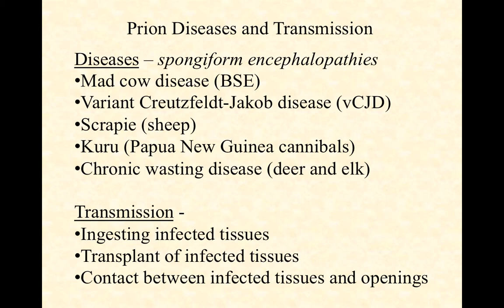Chronic wasting disease is not uncommon and is seen especially in deer and elk. Hunters are often warned to watch for chronic wasting disease in animals they've killed, because contact with body fluids or eating infected tissues means the prion proteins can escape the brain and get into other tissues. If hunters eat those tissues, they can come down with a prion disease directly from the deer or elk.